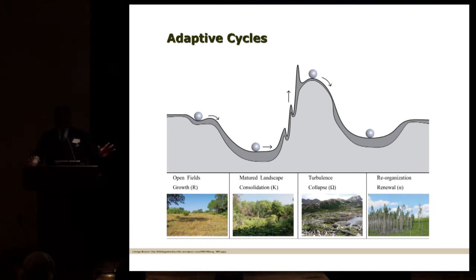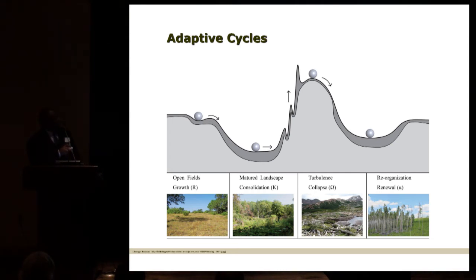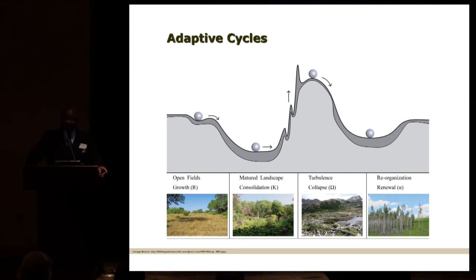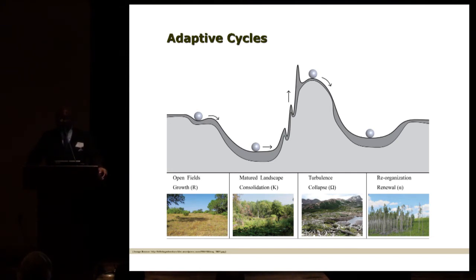The challenge for us is to develop urban ecosystems that are able to maintain their stability, yet elastic enough to rebound when there are disturbances. Because in some ways, a very stable ecosystem might be very rigid and unable to adjust to changes — a stable ecosystem is not necessarily an adaptable system.